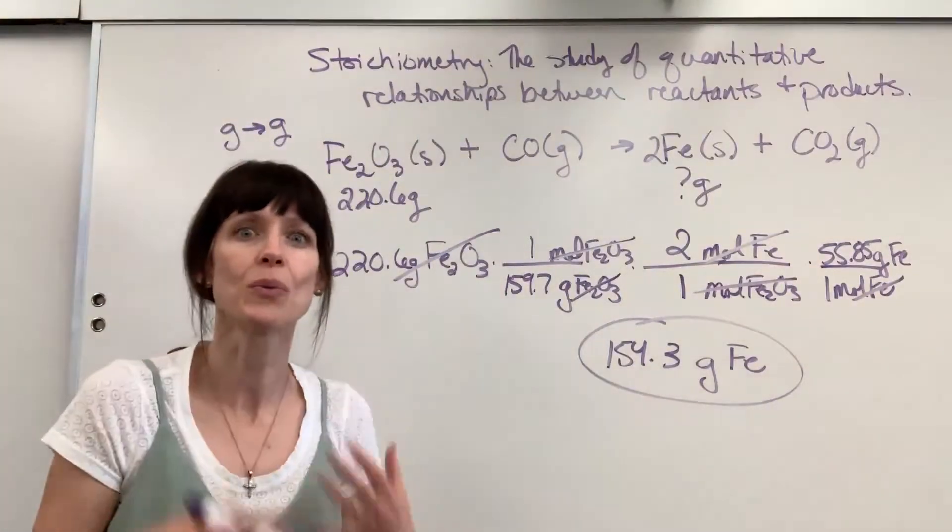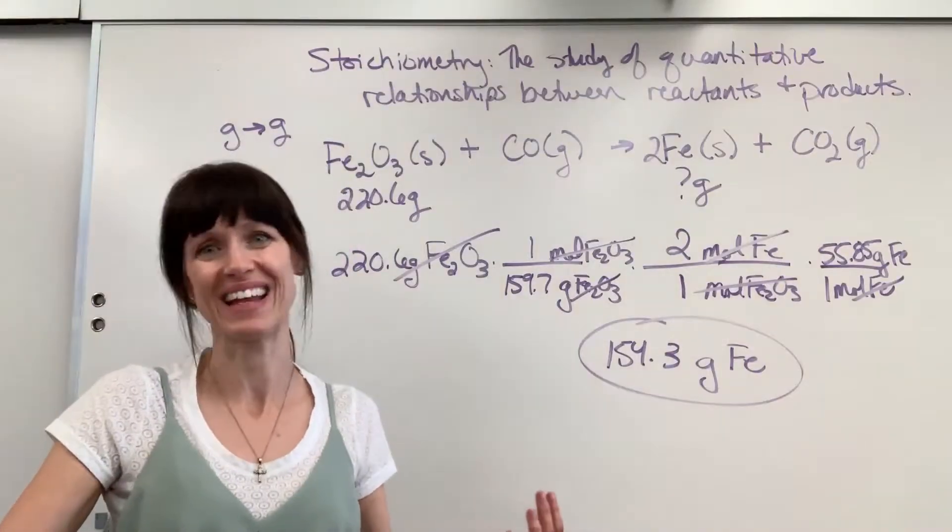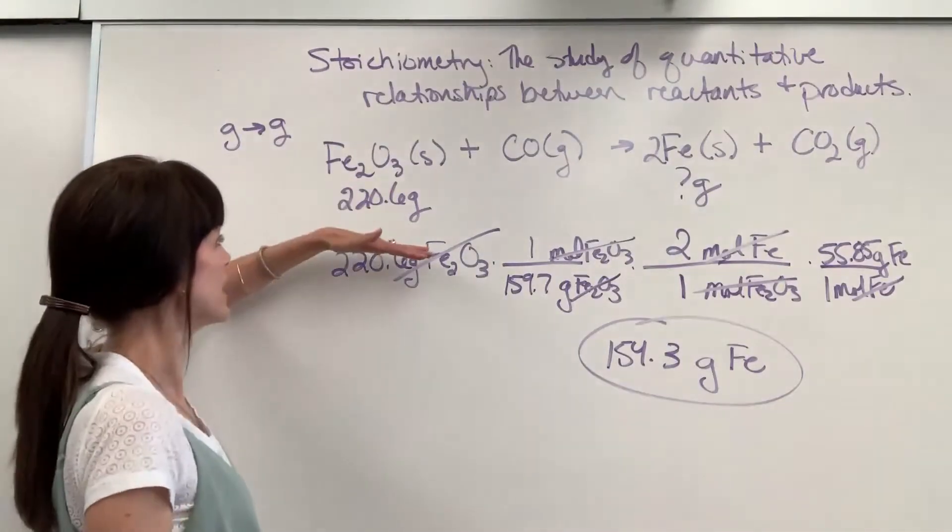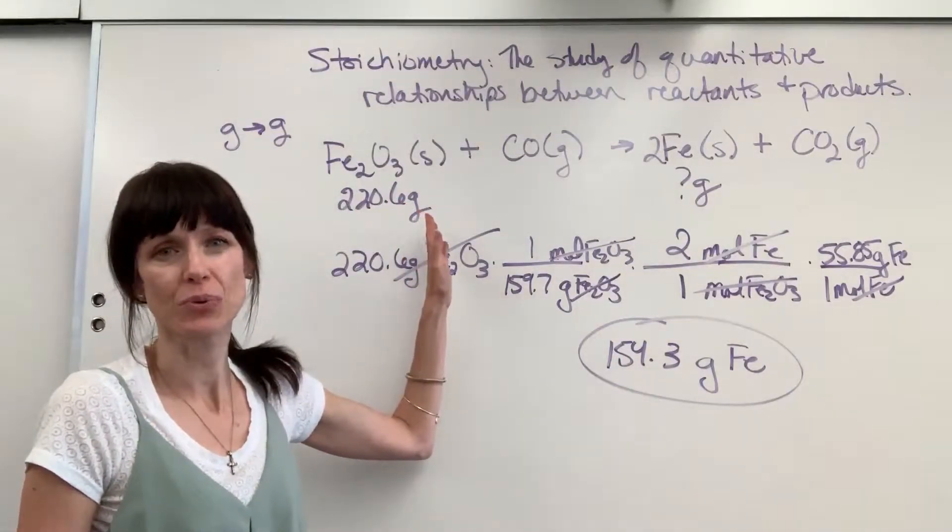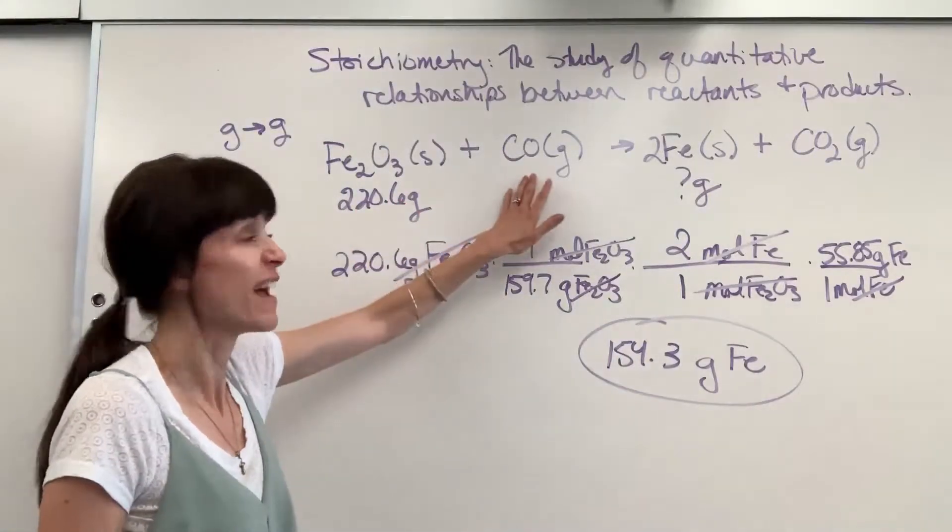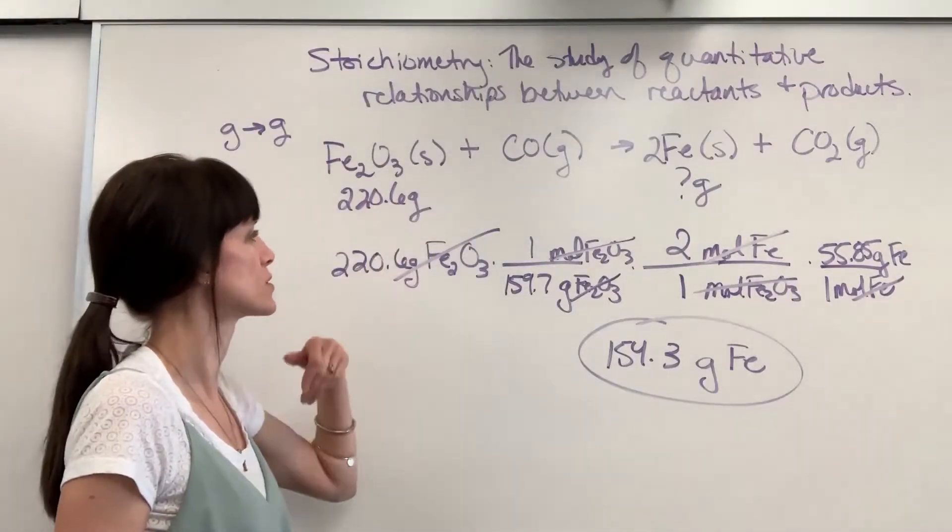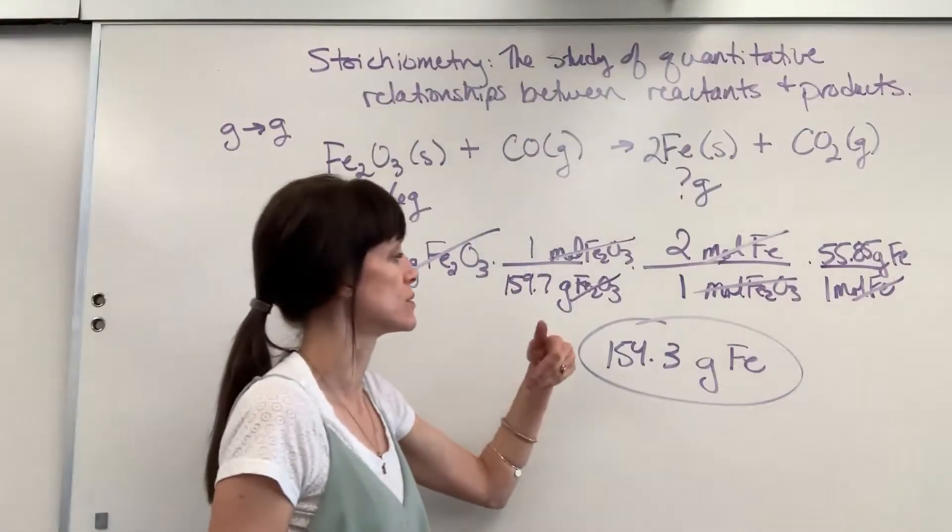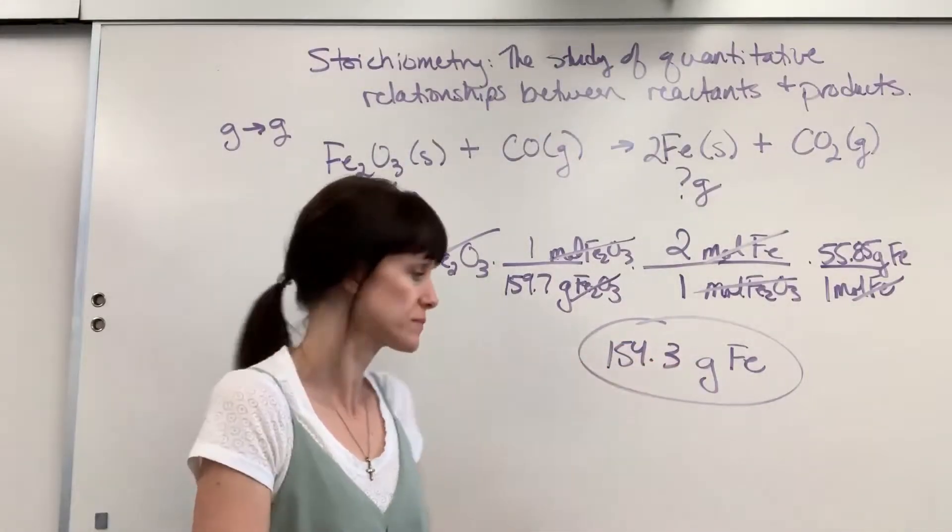Now you want to go back and say, what is this? What did I just find? If we use, consume all of the 220.6 grams of iron, have excess, plenty of CO. So we use all of the 220.6 grams, it will produce 154.3 grams of iron.